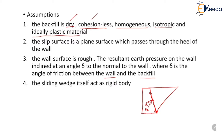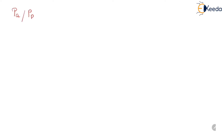The last assumption is that the sliding wedge itself acts as a rigid body. The Coulomb's wedge theory is used to determine the value of active earth pressure or passive earth pressure depending upon the movement of the retaining wall. Before discussing the theory in detail, we will discuss the overall procedure to determine the value of PA or PP using this theory.